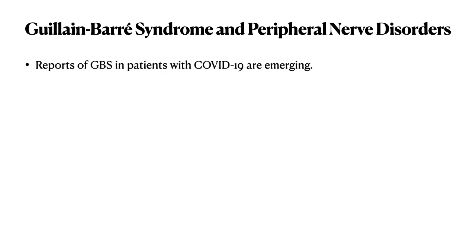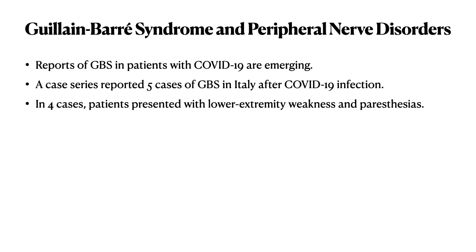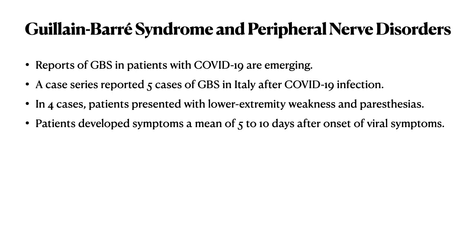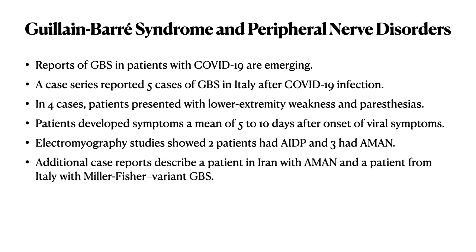GB syndrome and peripheral nerve disorders are also reported. In a case series of five patients from Italy, four presented with lower extremity weakness and paresthesia, developing symptoms a mean of 5 to 10 days after viral symptom onset. EMG showed two patients with AIDP and three with AMAN. Additional case reports from Iran showed one case of AMAN, and a patient from Italy showed the Miller-Fisher variant of GB syndrome.